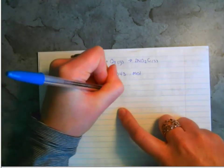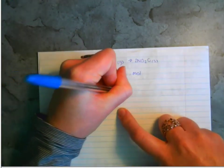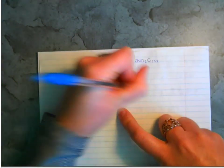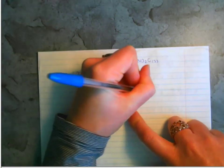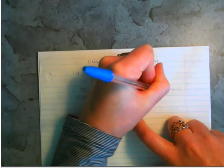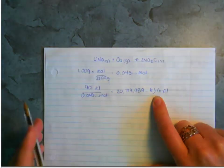If you do the math, it's going to be 20,713.989 kilojoules. So that's how many kilojoules are released per mole of sodium.